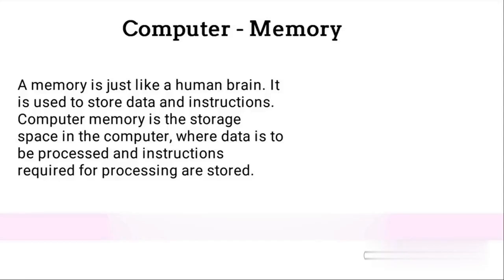Computer memory. A memory is just like a human brain. It is used to store data and instructions. Computer memory is the storage space in the computer where data is to be processed and instructions required for processing are stored.